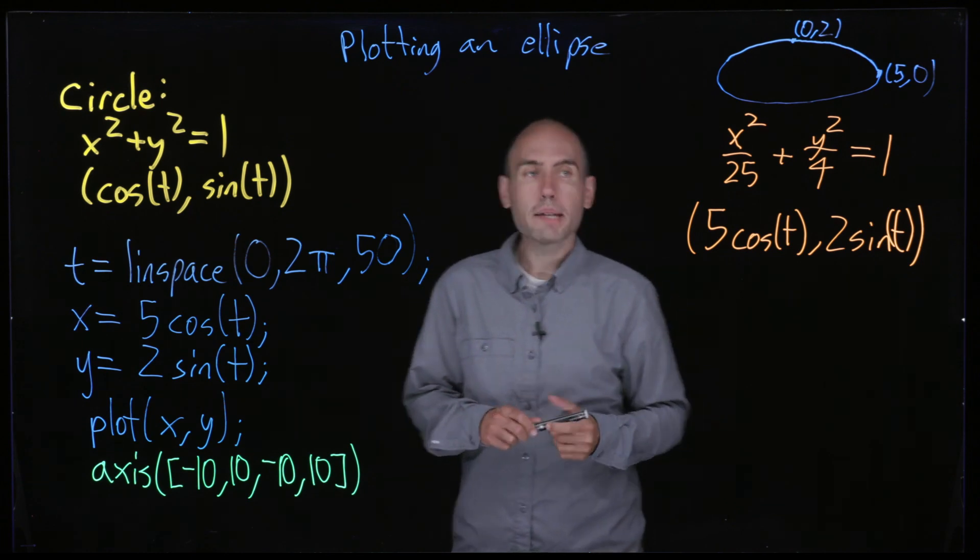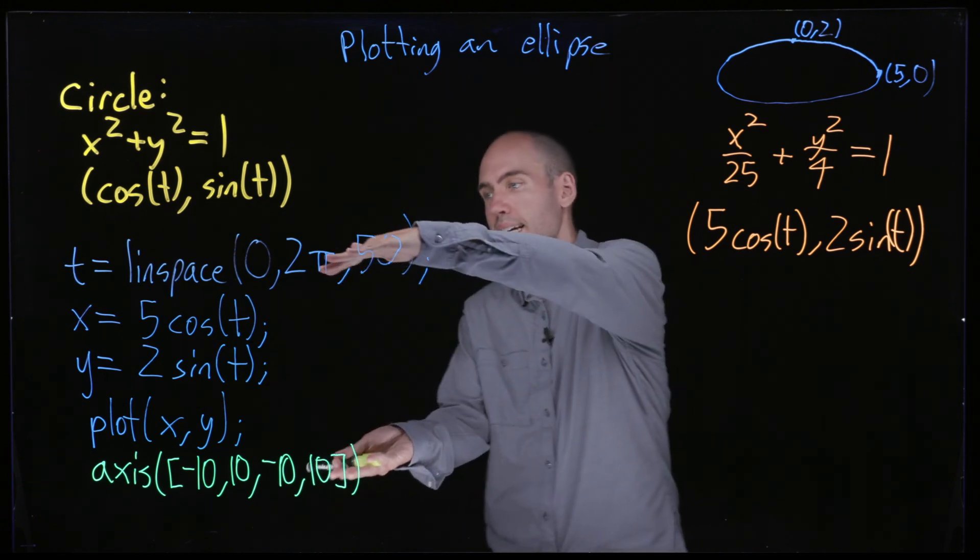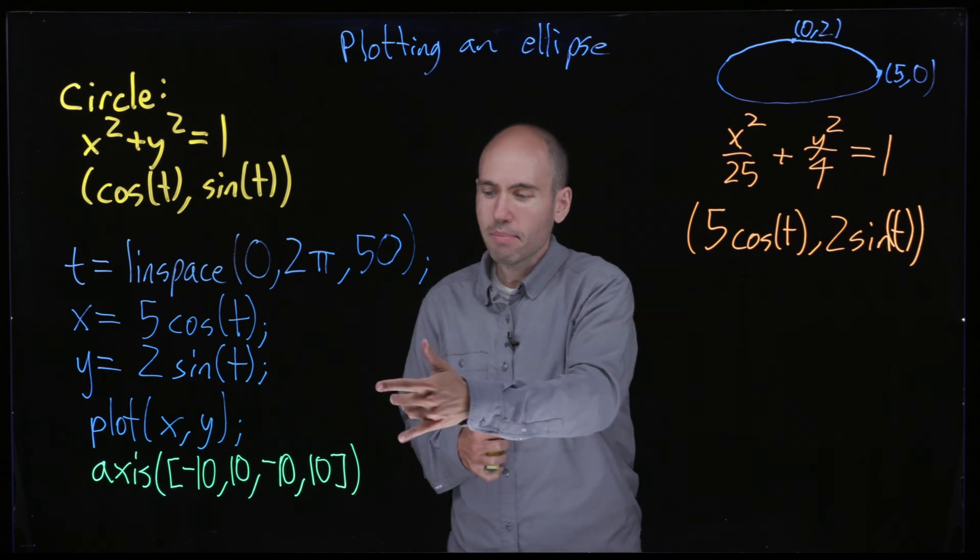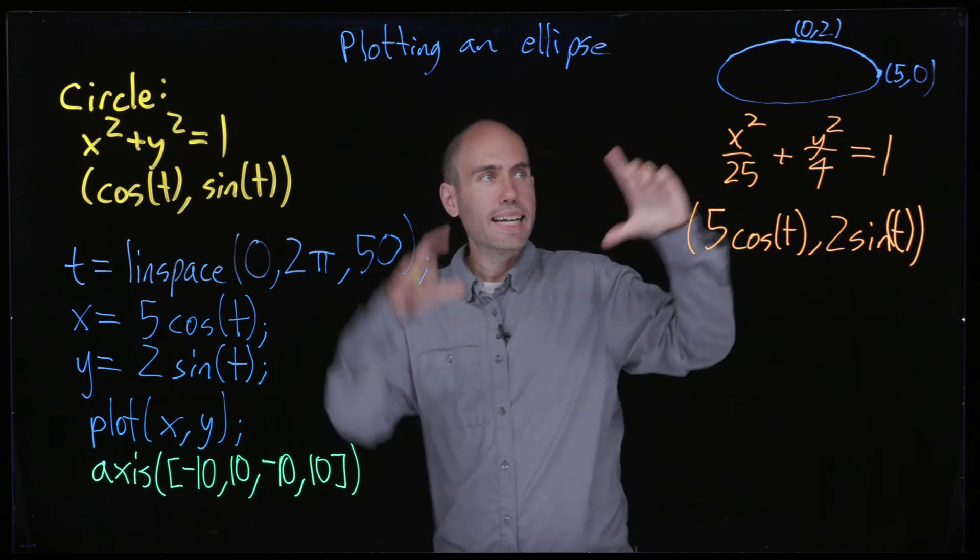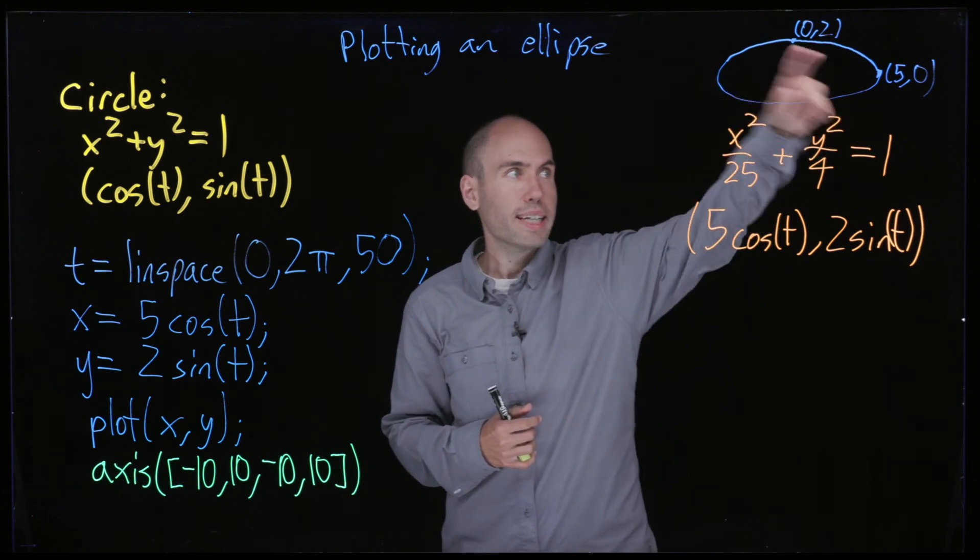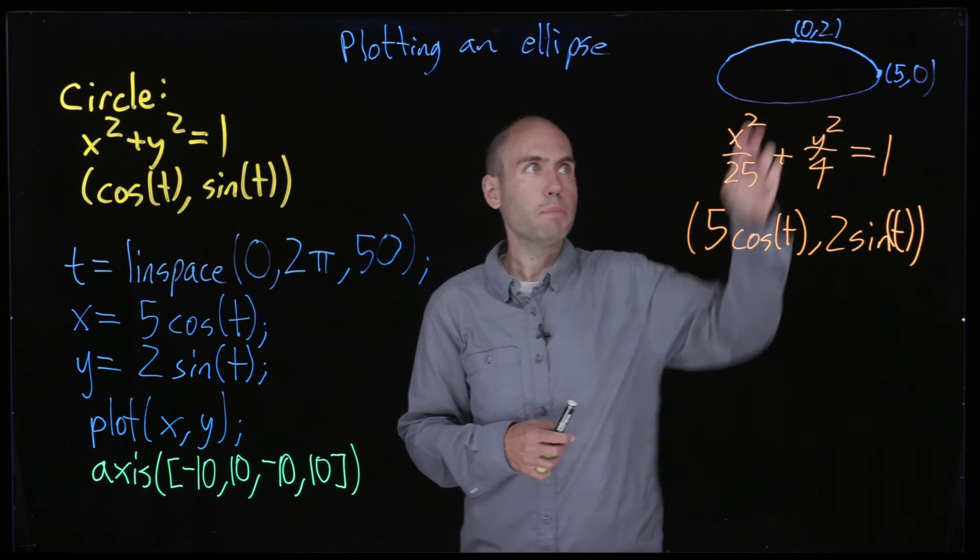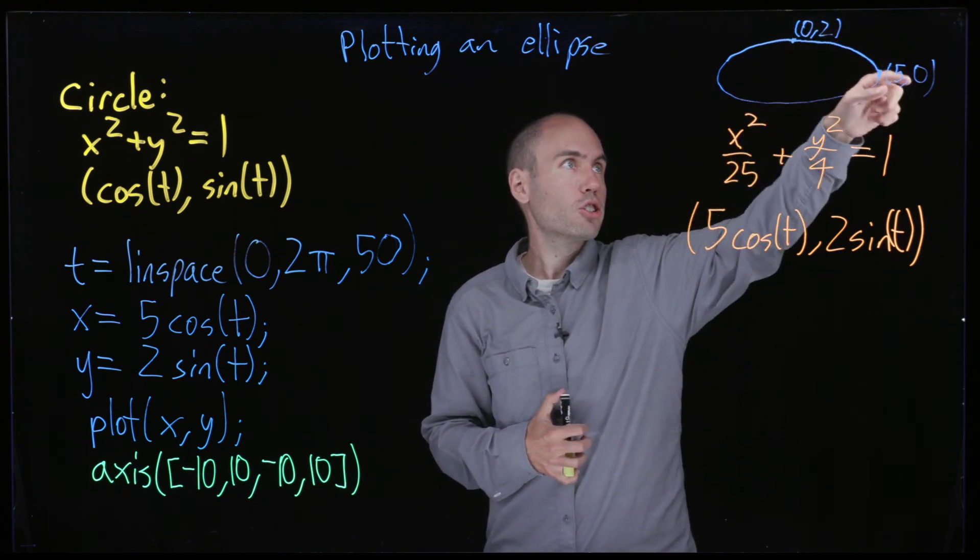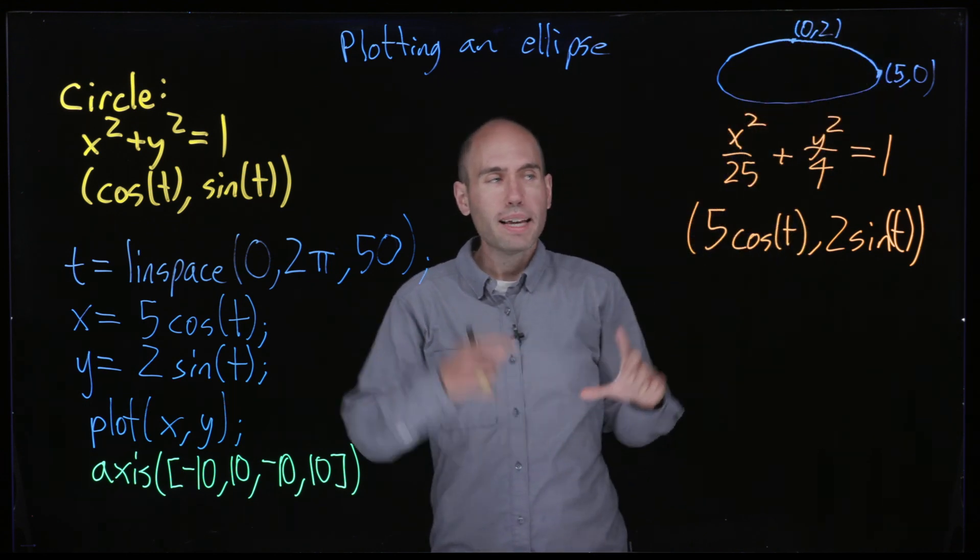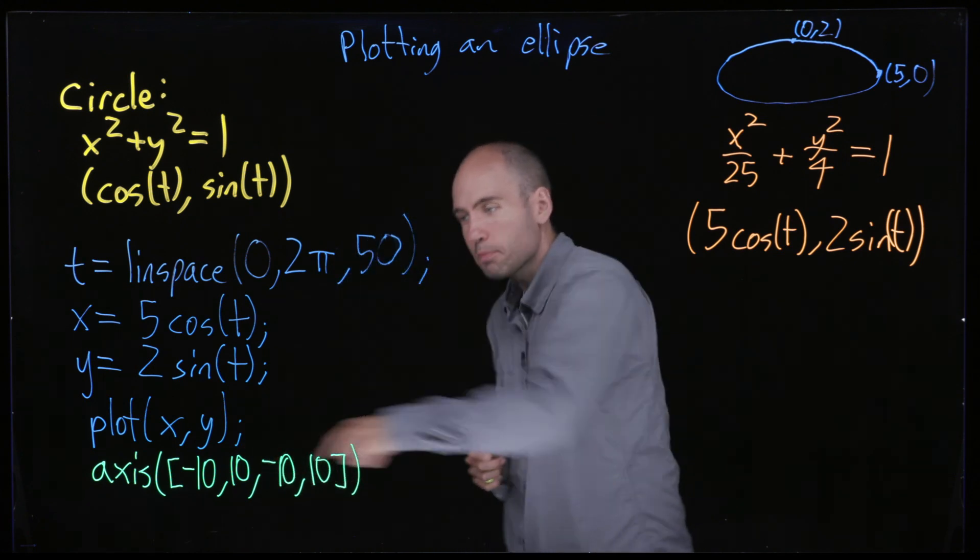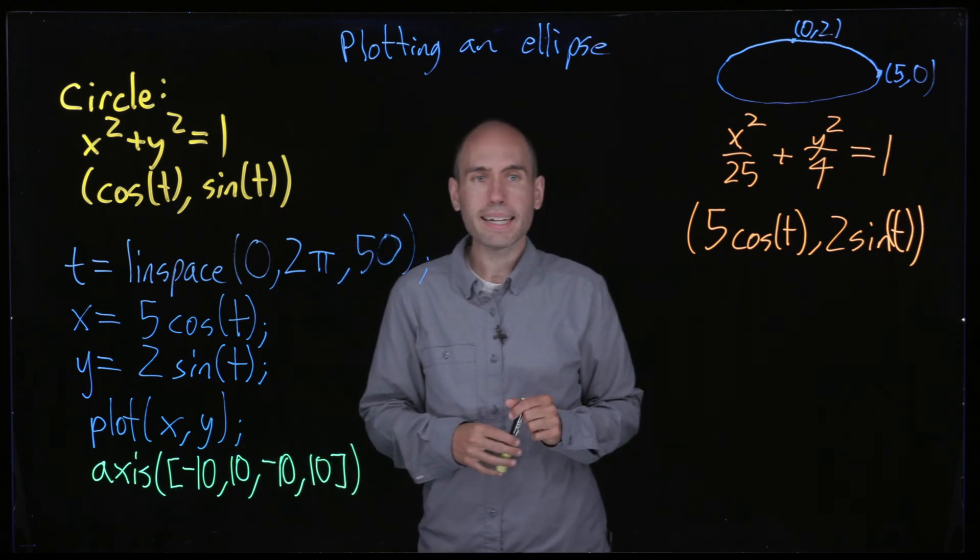And now if you try executing these 5 lines inside of MATLAB and then you run it, then you're going to see in a separate window, you're going to see a plot that looks just like this ellipse without these labeled points. But you'll see the right shape and the proportions will be correct because of this axis command at the bottom.